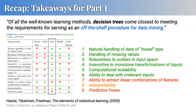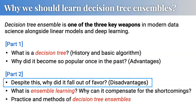But decision trees have big problems. The first one is that predictive performance is not that good compared with state-of-the-art methods after the 2000s, like neural networks or support vector machines. Also, they are not good at handling standard datasets like those suited for linear regression.